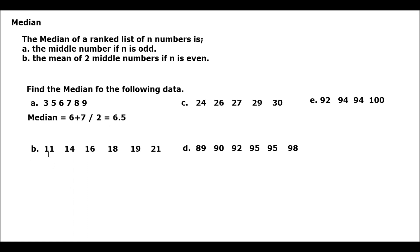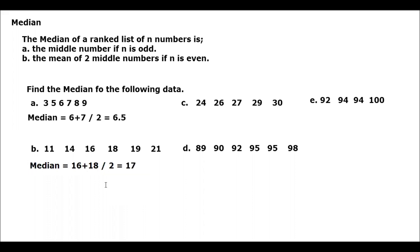For letter B, counting the number of data gives us 6. So N is even, meaning the median is the mean of the 2 middle numbers. The middle numbers are 16 and 18. So we have 16 plus 18 divided by 2, which equals 34 divided by 2, and that equals 17. The median for letter B is 17.